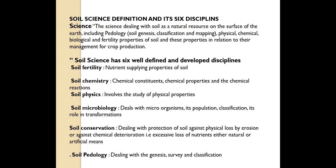Soil science is the science dealing with soil as a natural resource on the surface of the earth, including pedology and physical, chemical, biological, and fertility properties in relation to the management of crop production. Soil science has six well-defined and developed disciplines.